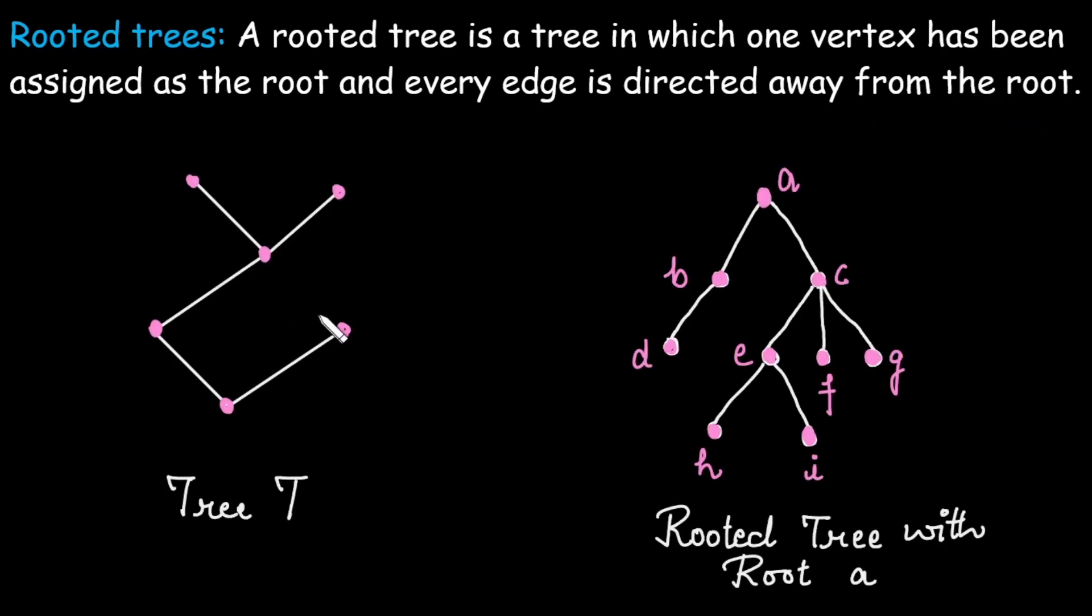For example in this figure we have a basic tree. It is not a rooted tree because no vertex has been assigned as the root. However if we take this tree, in this case we call it a rooted tree with the root a.